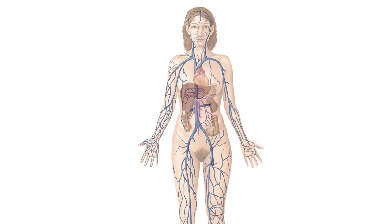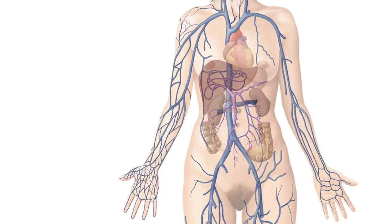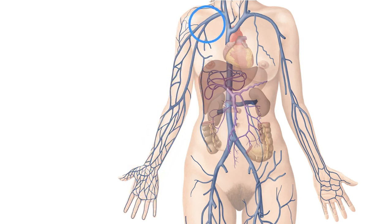In this tutorial, we'll be focusing specifically on the upper limb, breaking it down to help you really understand the venous anatomy here. Starting with the venous networks of the hand, I'll take you upwards through the forearm and upper arm, showing you the various pathways the deoxygenated blood might take on its journey back towards the heart.